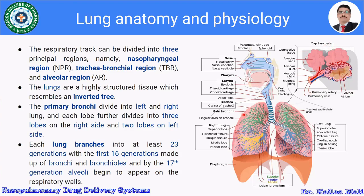The respiratory tract can be divided into three principal regions: the nasopharyngeal region, the tracheobronchial region, and the alveolar region. The lungs are a highly structured tissue which resembles an inverted tree.